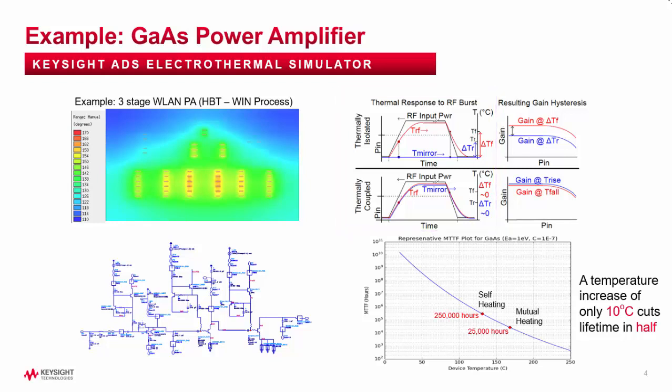The plots are separated into two different design iterations. In the upper plots, the design was laid out such that the bias network is thermally isolated from the RF transistors. This results in gain hysteresis, which is a manifestation of thermal memory effects. Note how the temperature of the bias transistor, T-mirror, does not track with the temperature of the RF transistor, TRF.